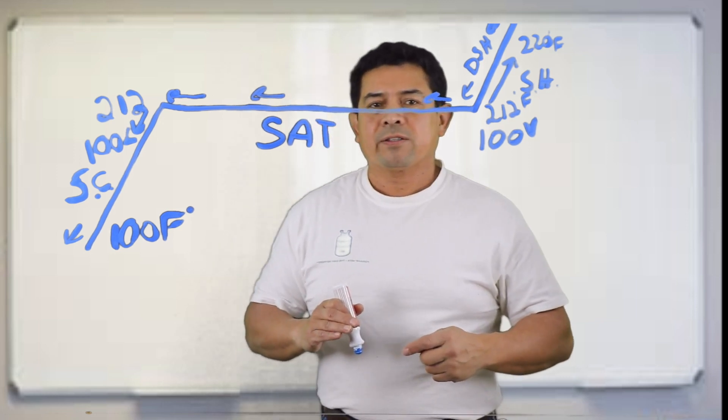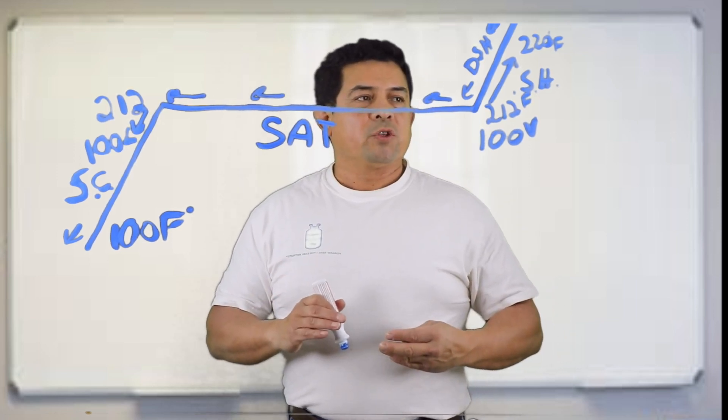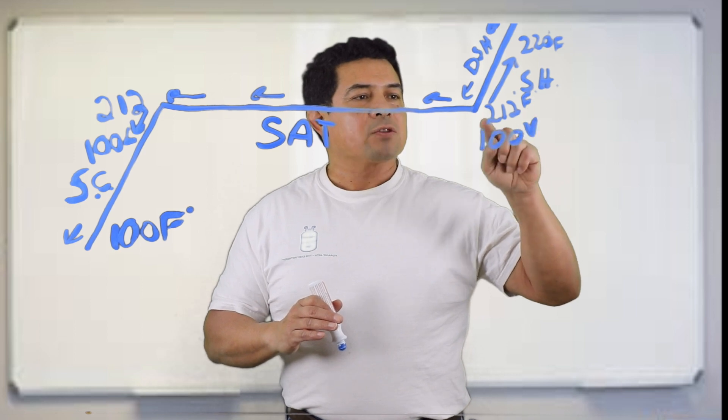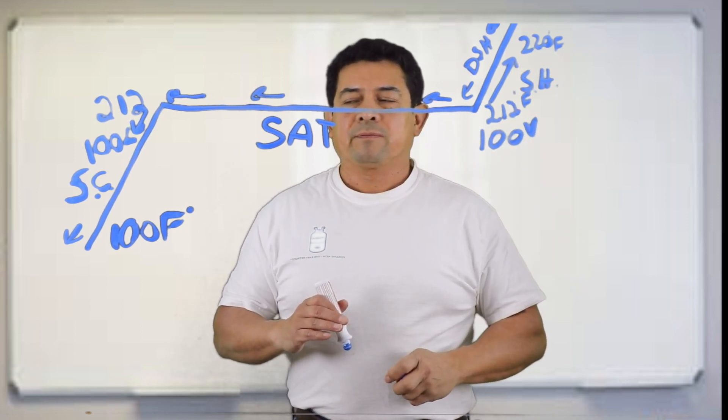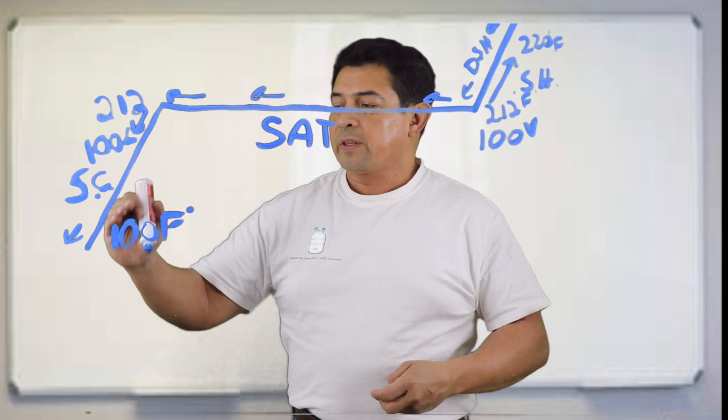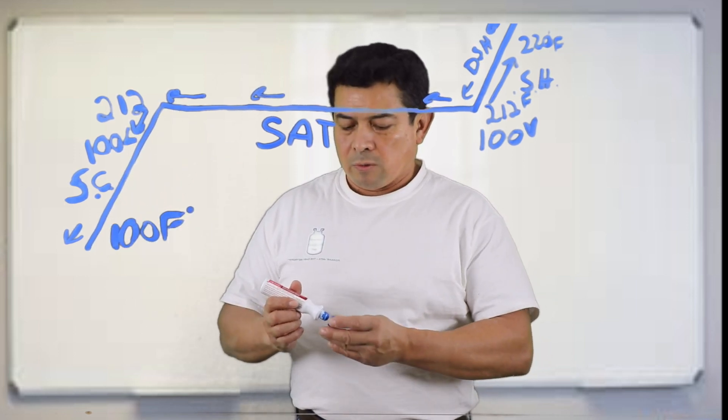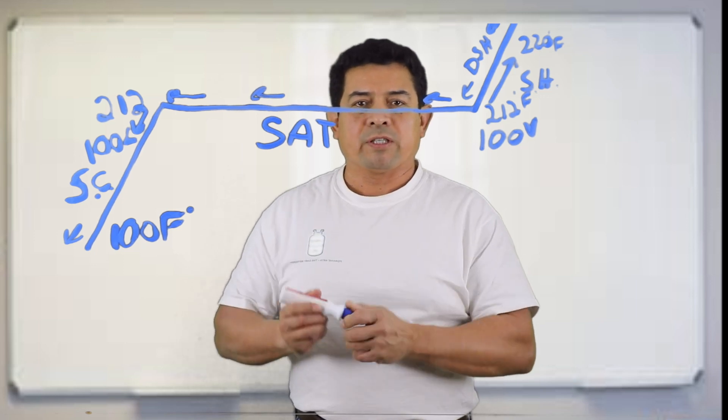So in class, usually I ask the students, what is the definition of superheating? Superheating is raising the temperature above the saturation temperature. What is subcooling? Subcooling is lowering the temperature below the saturation temperature.